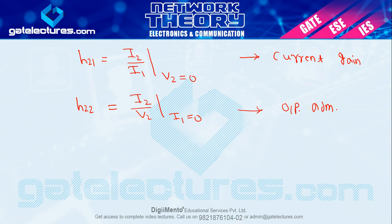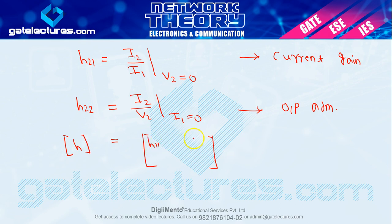So यह आपके 4 parameters define हो गए: h11, h12, h21, and h22. अब आपको एक simple h matrix बना लेना होगा representation के लिए — [h11, h12; h21, h22]. इस तरह से आप by definition exam में किसी भी circuit के h parameters calculate कर सकते हैं.